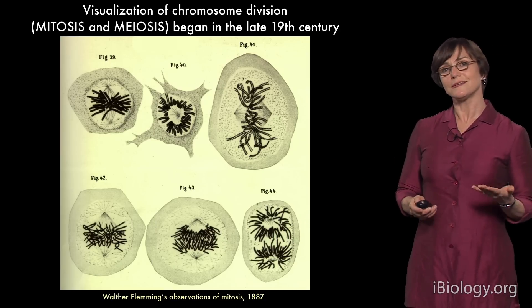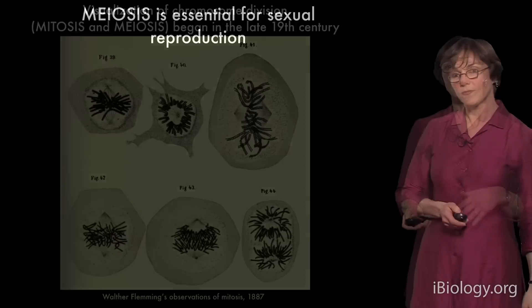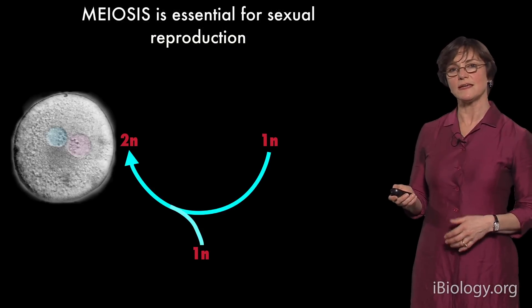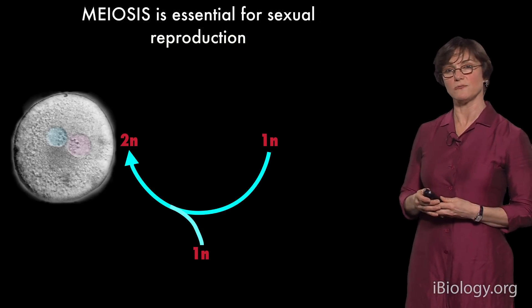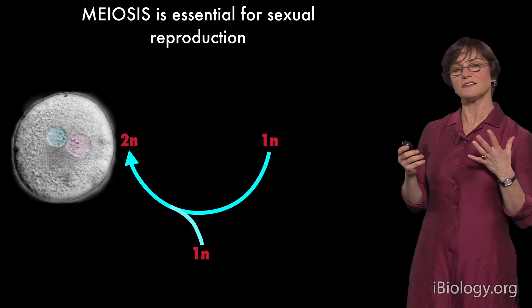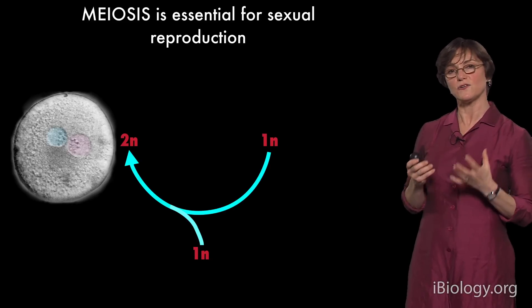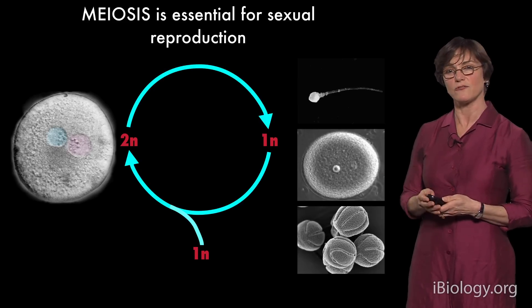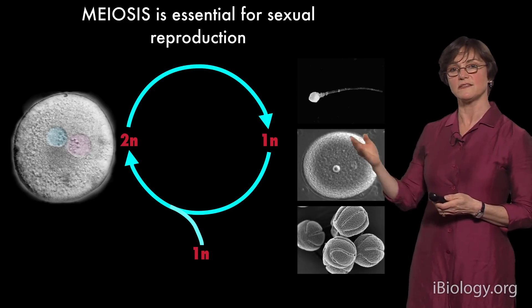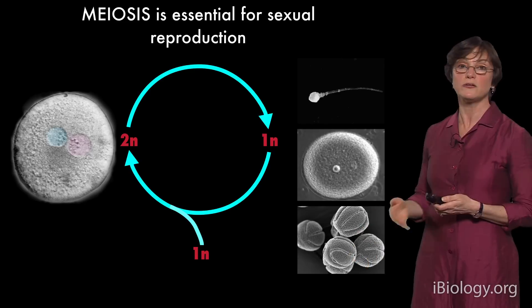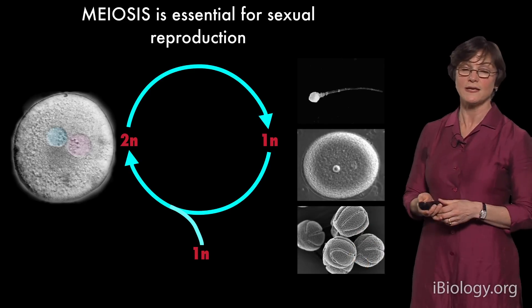Meiosis is a little bit different. The fundamental goal of meiosis is to take a cell that has two sets of chromosomes — the set inherited from the father and the set from the mother — and divide those chromosomes to produce cells that have only a single set. Those haploid cells then go on to develop as sperm, eggs, pollen, or spores.